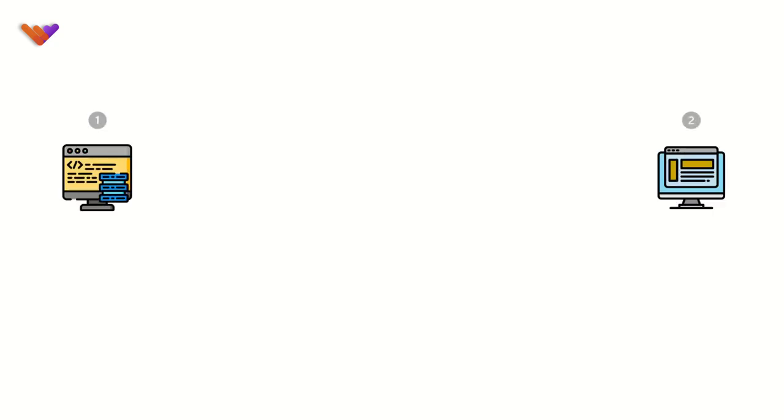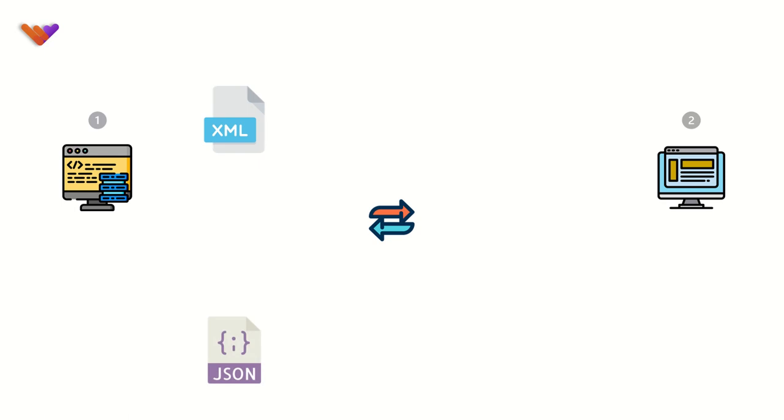Suppose we have two different systems built for these organizations, crafted onto different platforms with a different data model — for example, Java and MySQL versus .NET and Cosmos DB. The two systems would be called interoperable if they can exchange information with each other and interpret the same. The exchange of information can be implemented by utilizing any of the established protocols designed for integrating systems, where a platform-neutral data language like XML or JSON can be used as a medium of communication.